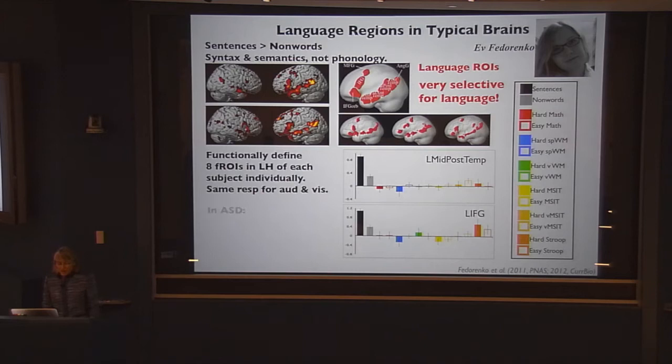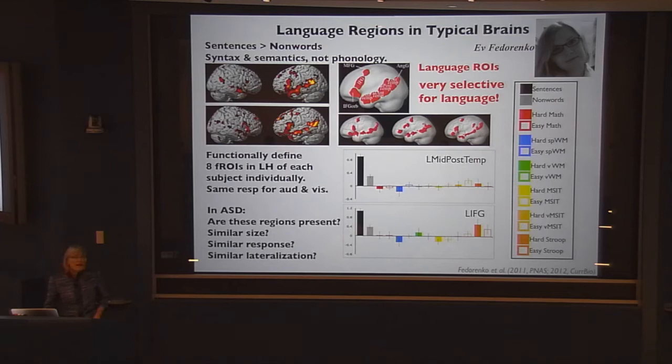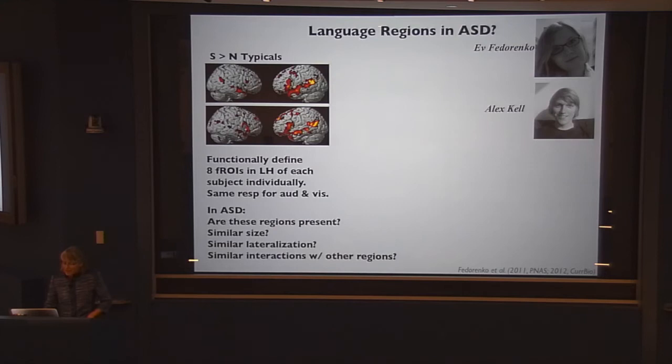It's not that these other tasks don't activate the brain — they activate nearby regions very robustly, just not these regions. That's cool and important because it means we can target those regions and we're really looking at something about language. They're a marker for language specifically, not any old aspect of high-level cognition. So we can now ask in autism whether these regions are present, of similar size, show similar response magnitude, and are lateralized to a similar degree.